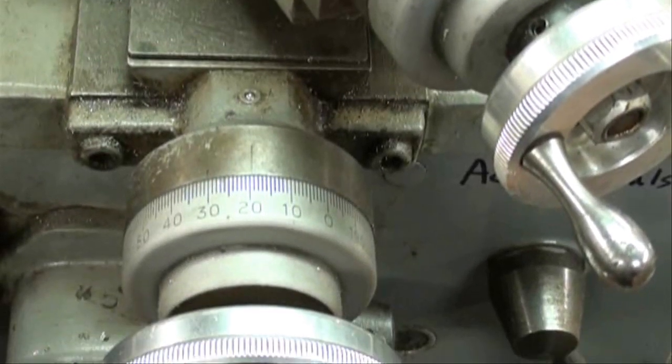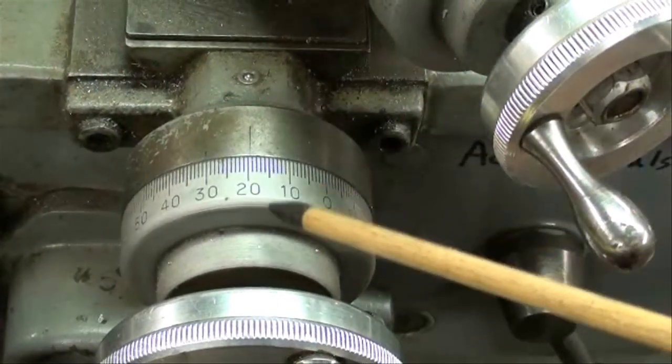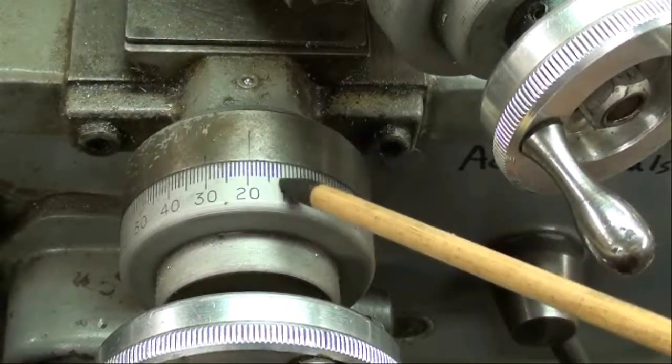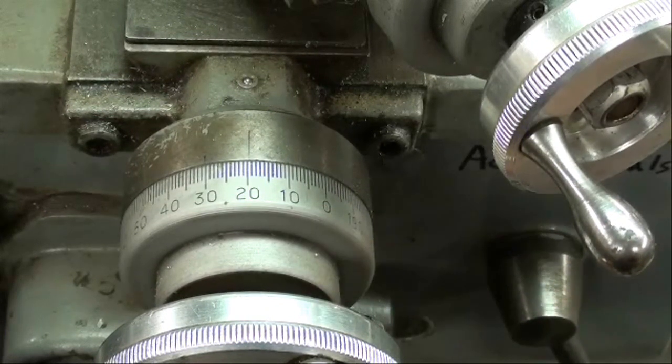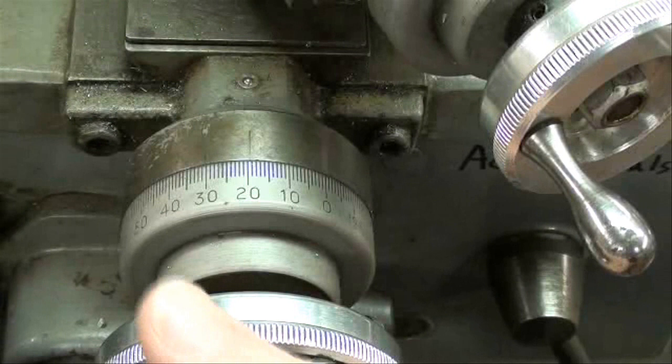These are the dials on my Clausing 12-inch lathe, and they're about two and a half inches in diameter. And to make it even better, they are satin chrome finish, and just very easy to read. And it's a pleasure to use this machine because of this feature alone.